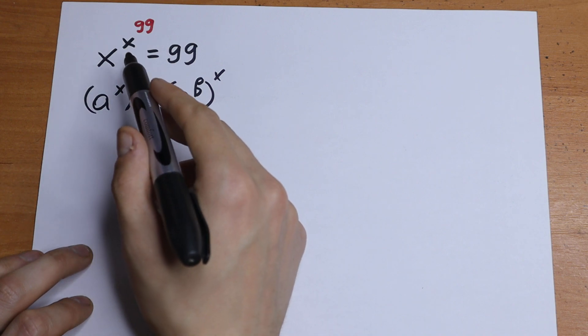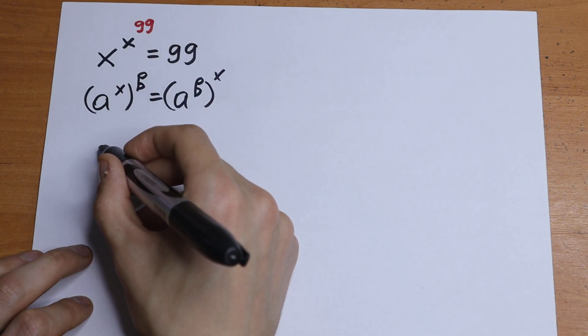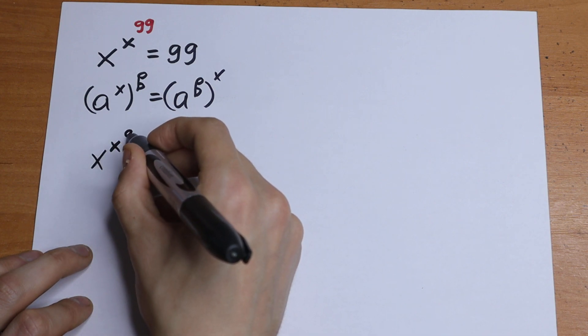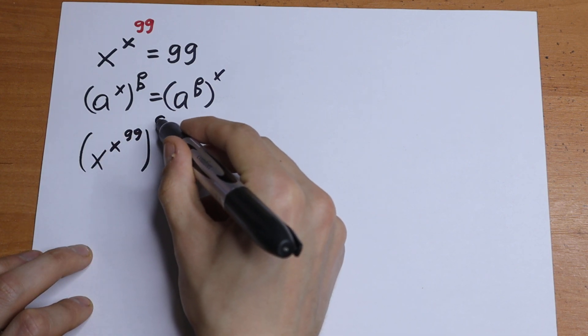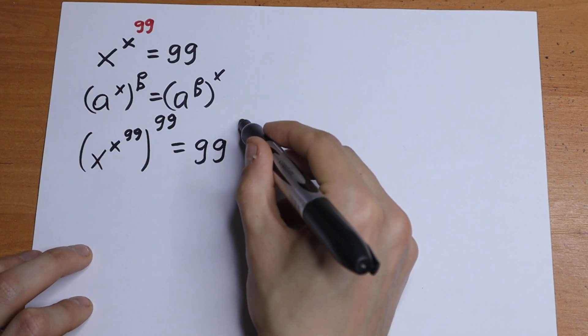Let's write it and raise both sides by 99th power. We will have x to the power x to the 99th power on the left, raised to the 99th power, equal to 99 to the 99th power.